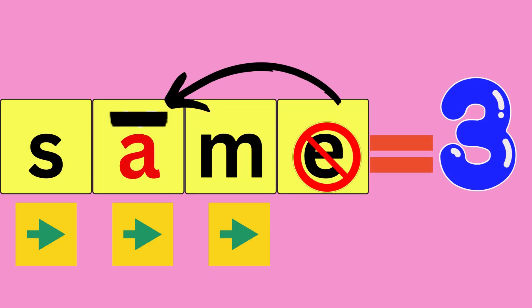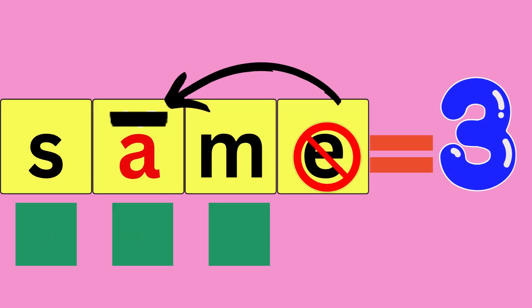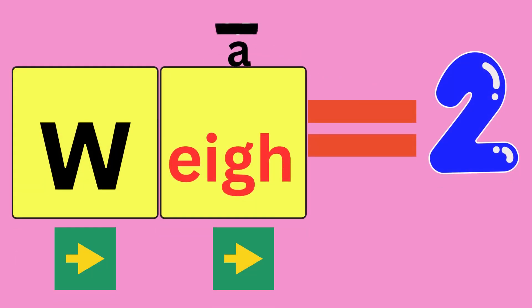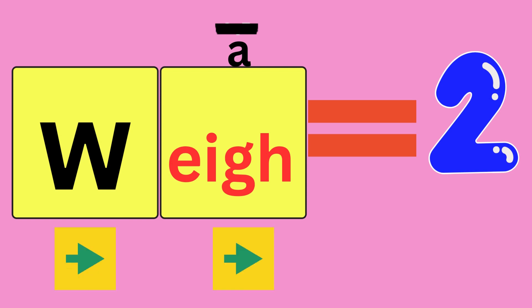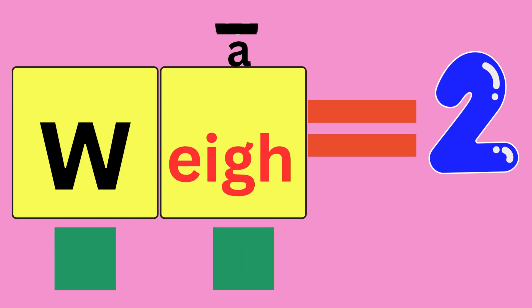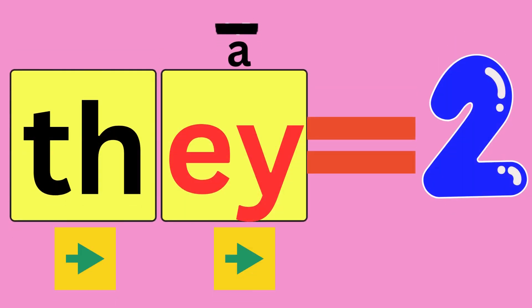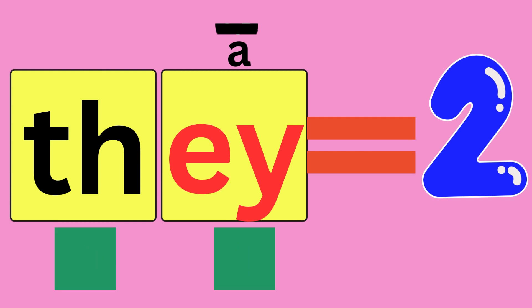Same: S-A-M, same. How many sounds did you hear? Three. Way: W-A-Y, way. How many sounds did you hear? Two. They: the A-Y, they. How many sounds did you hear? Two.